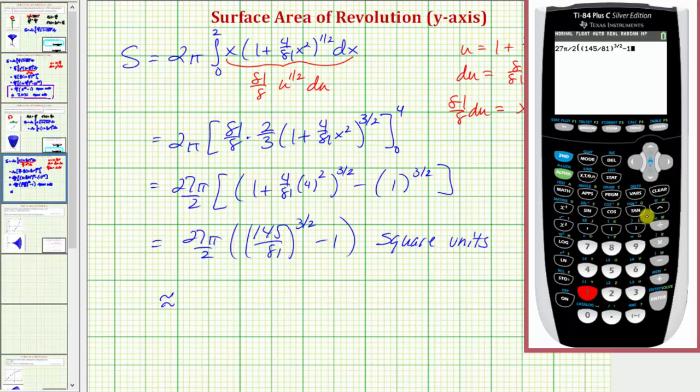Close parenthesis, and enter. So the surface area is approximately 59.1685 square units.